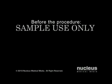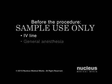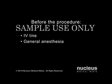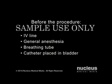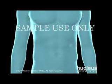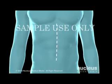Before the open procedure, an IV line will be started to provide you with fluids, antibiotics, and anesthesia. A traditional open surgical repair is performed under general anesthesia, which means you will be asleep for the duration of the procedure. A breathing tube will be inserted through your mouth and into your windpipe to help you breathe during the operation. When you are asleep, a catheter will be inserted into your bladder to drain your urine and monitor your kidney function. Your surgeon will begin by making an incision from the breastbone to below the navel.